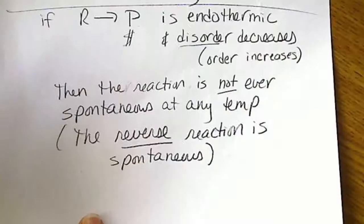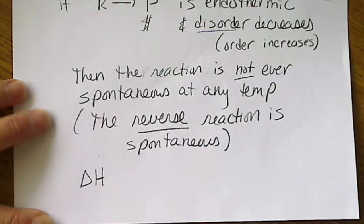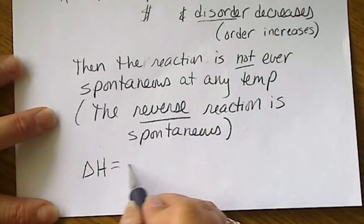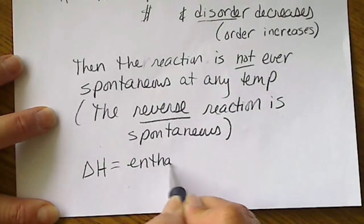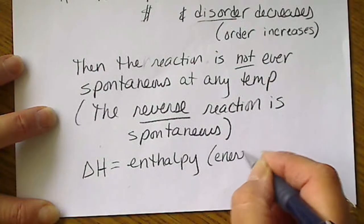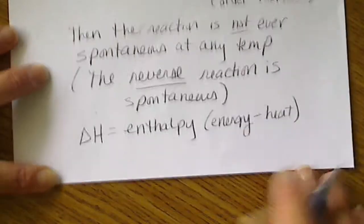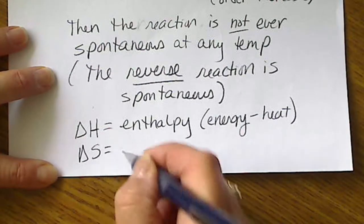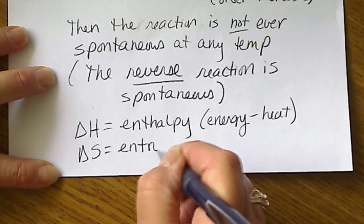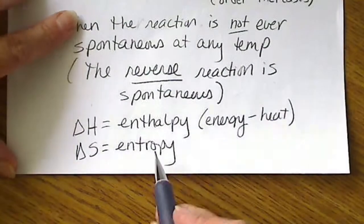So oftentimes the two terms are competing. So we have a delta H term. This is the enthalpy or heat. That's energy in the form of heat. And we have the entropy term. So this is the disorder term.